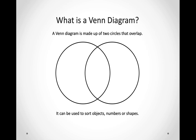Let's begin. What is a Venn Diagram? A Venn Diagram is made up of two circles that overlap. That means these circles go over each other. It can be used to sort objects, numbers or shapes.